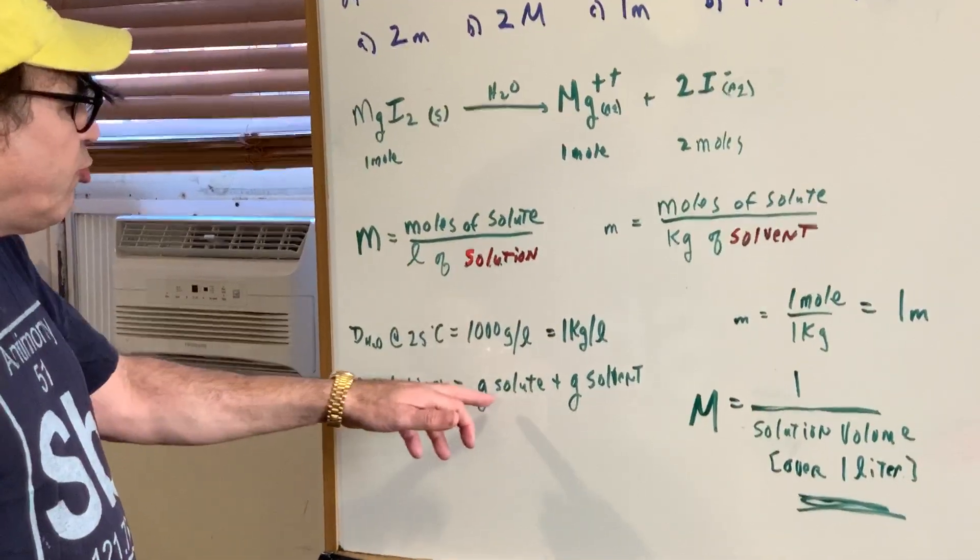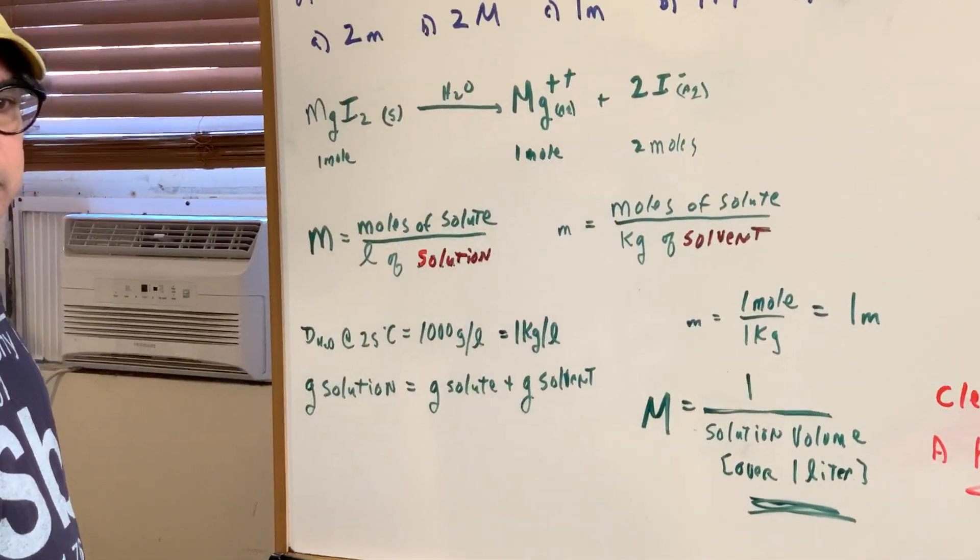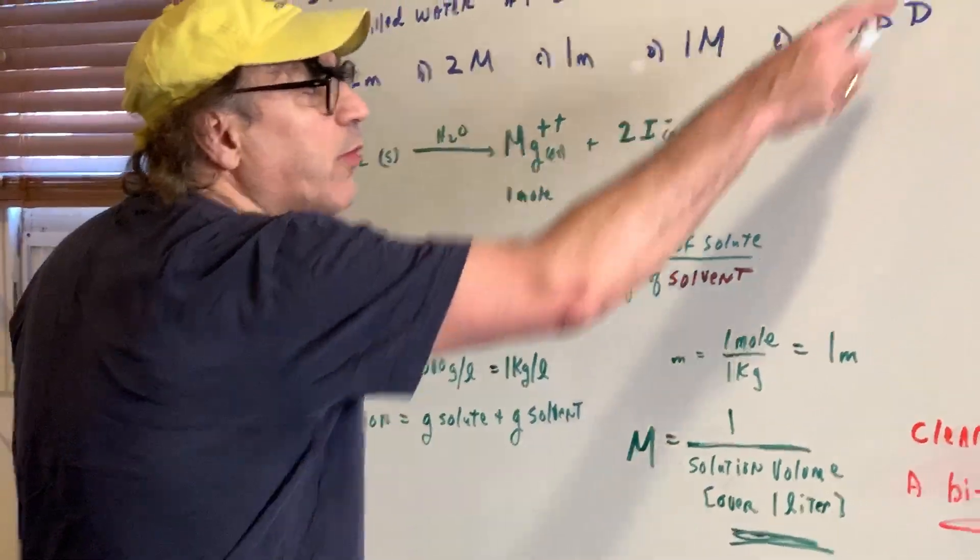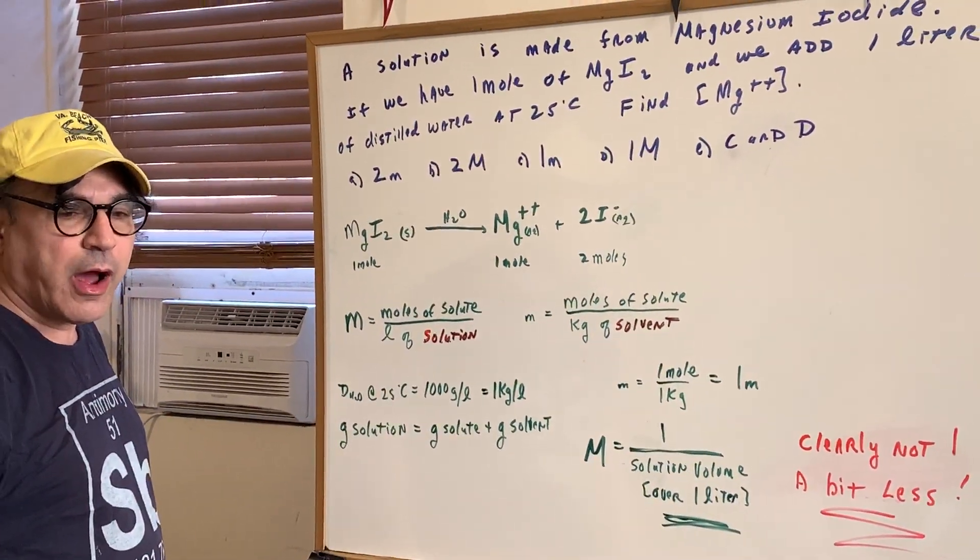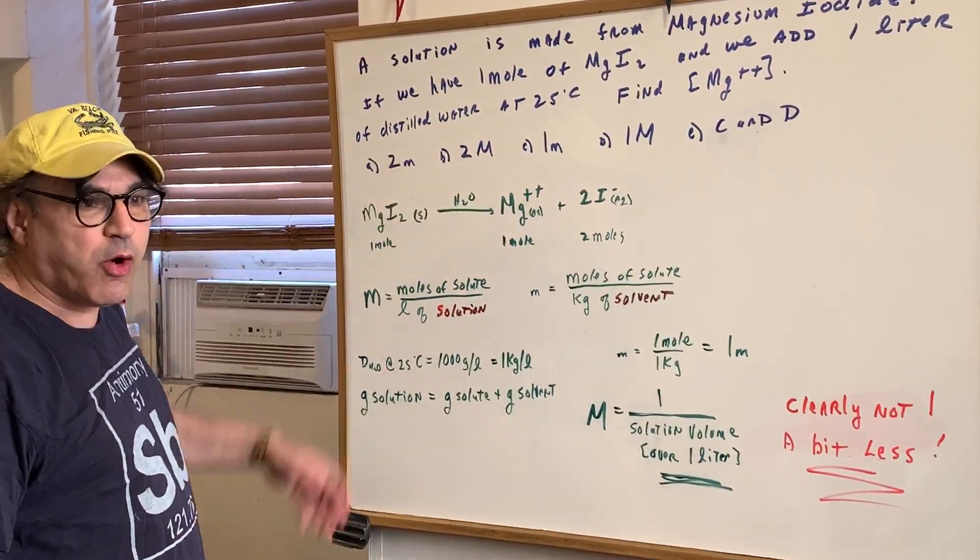Now grams of solution is grams of solute plus the grams of the solvent. Now be careful. What am I giving you? I'm giving you the liters of the solvent - not the solution but the distilled water, the solvent.